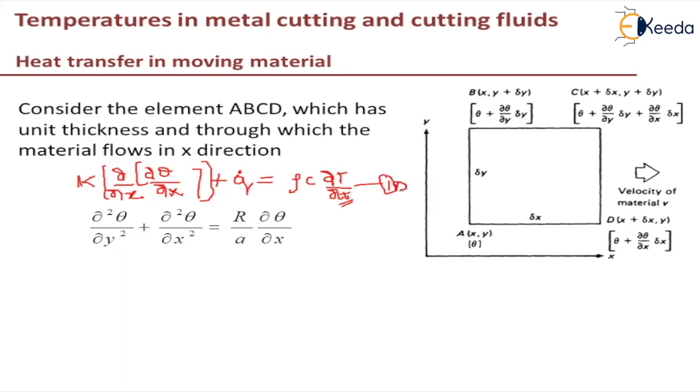Similarly if we write this for 2D, it will be dou square theta by dou y square plus dou square theta by dou x square. Assuming heat generation is zero here, it will be equal to R by a dou theta by dou x.